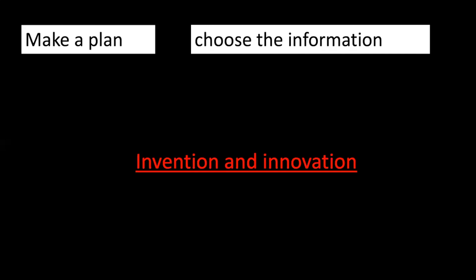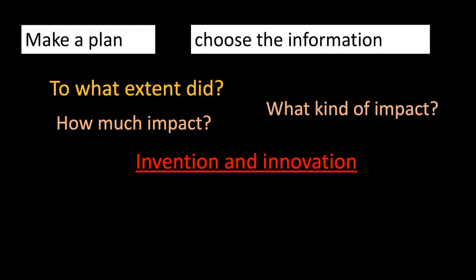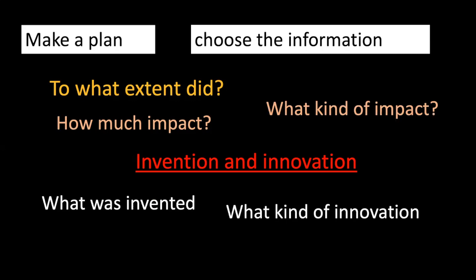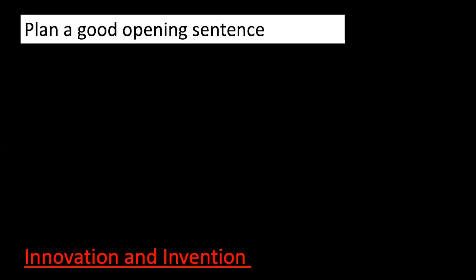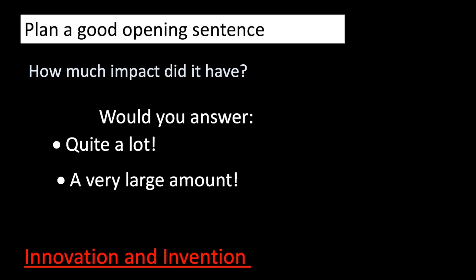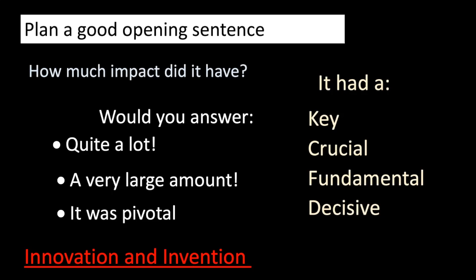For that question it's a really good idea to make a plan and carefully choose the information in line with the question, which is all about invention and innovation. Ask yourself: to what extent did invention and innovation have an impact? How much impact? What kind of impact? What was invented and what kind of innovation? Get them all down in your plan. Plan a good opening sentence — this helps with the writing. You could answer with words like 'pivotal,' 'crucial,' 'fundamental,' or 'decisive.'